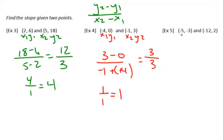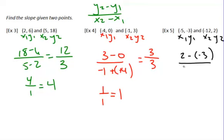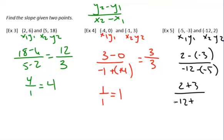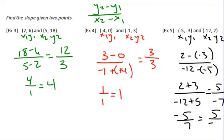Over here, label x1, y1, x2, y2. So it's going to be 2 minus negative 3 over negative 12 minus negative 5. Using keep-change-opposite: 2 plus 3 is 5, and negative 12 plus 5 is negative 7. So the slope is 5 over negative 7, or negative 5 over 7 — either one works.